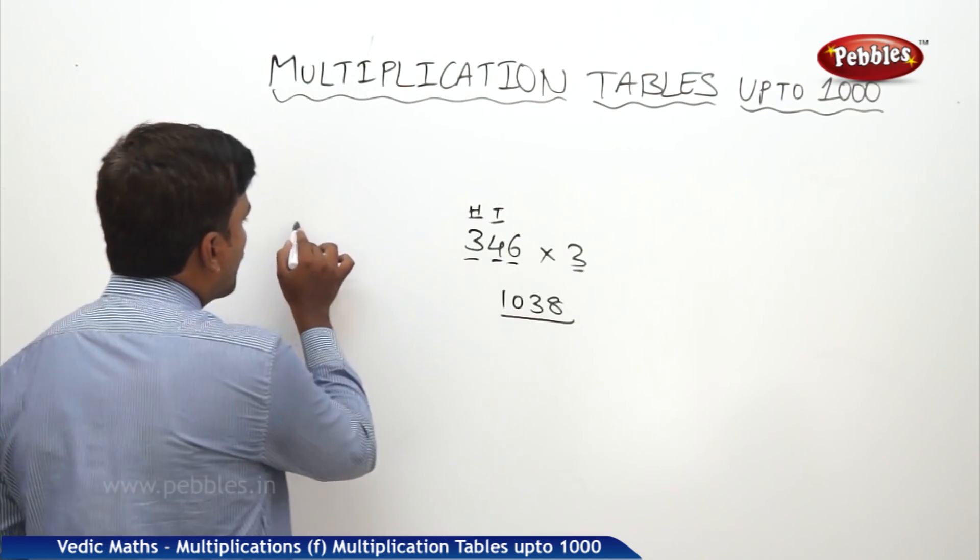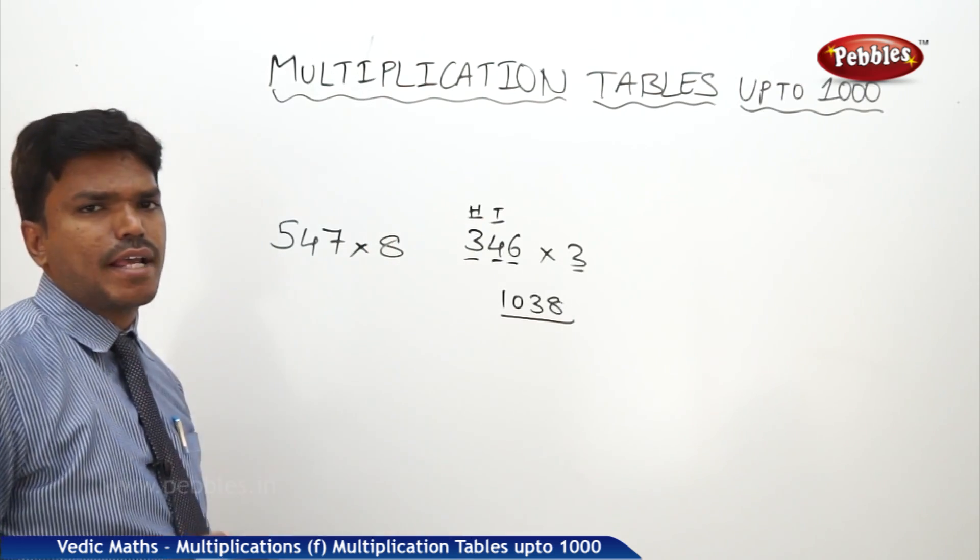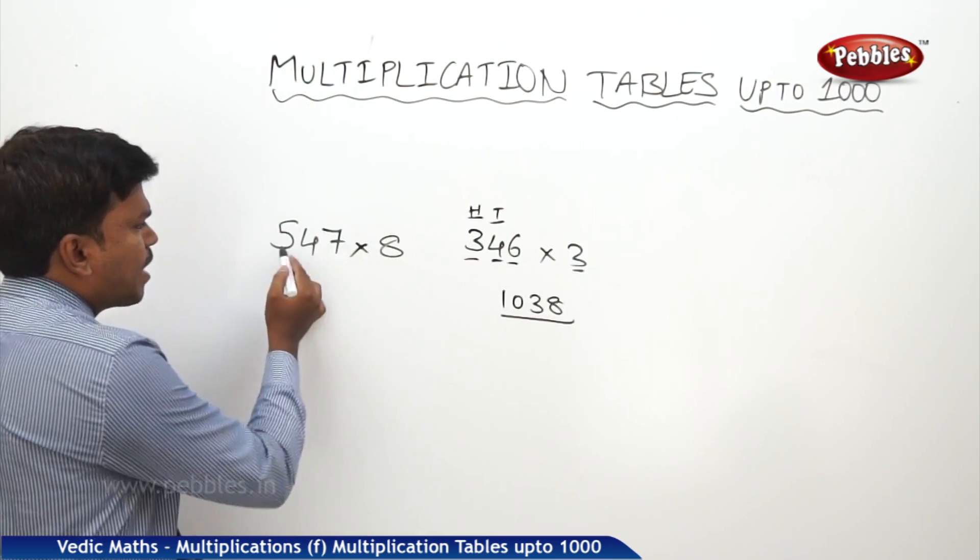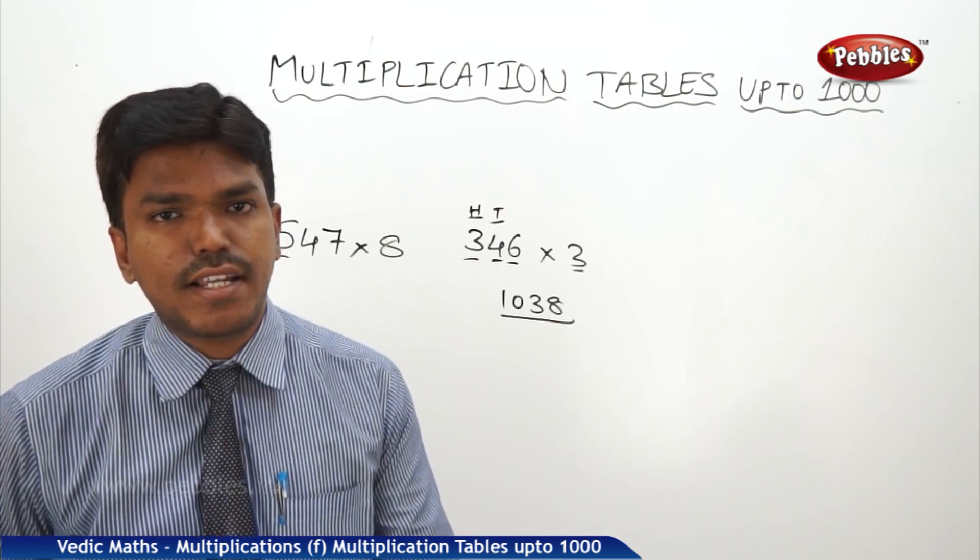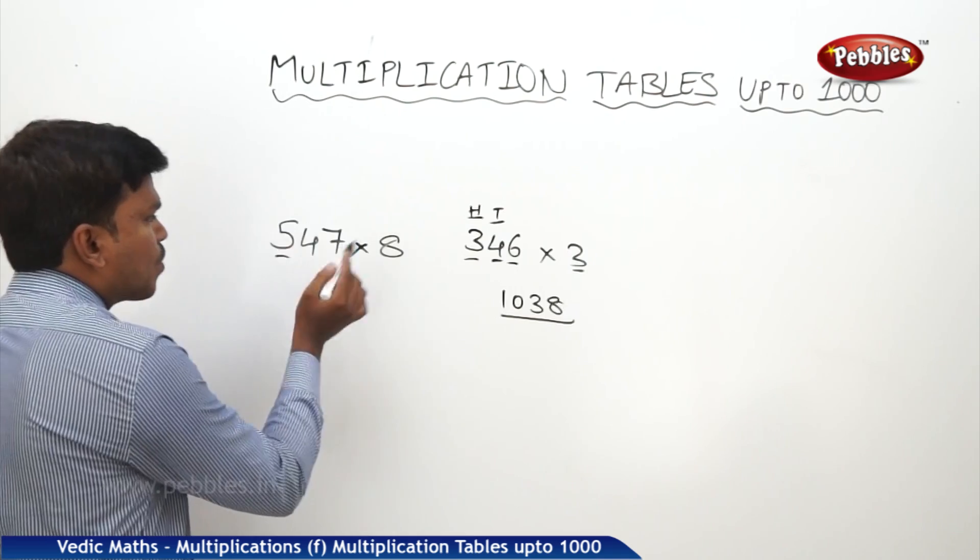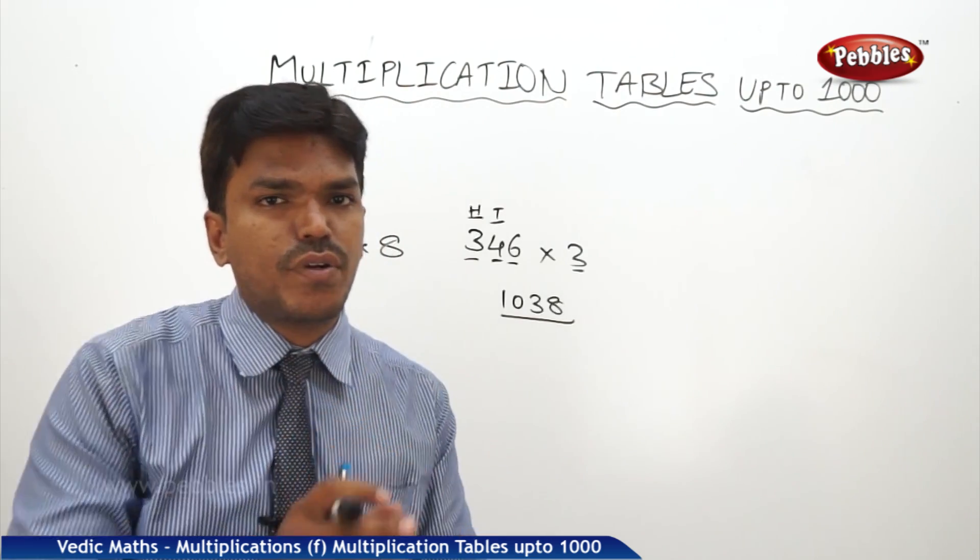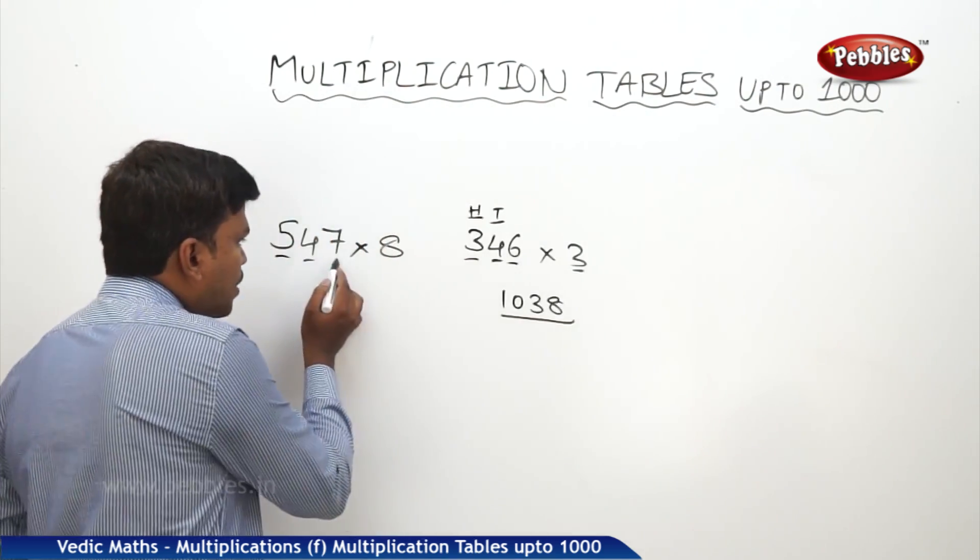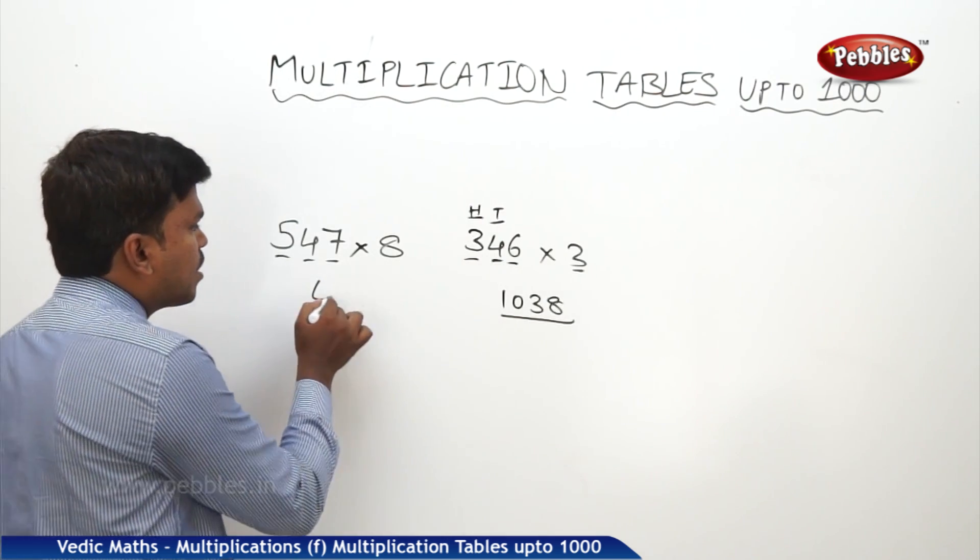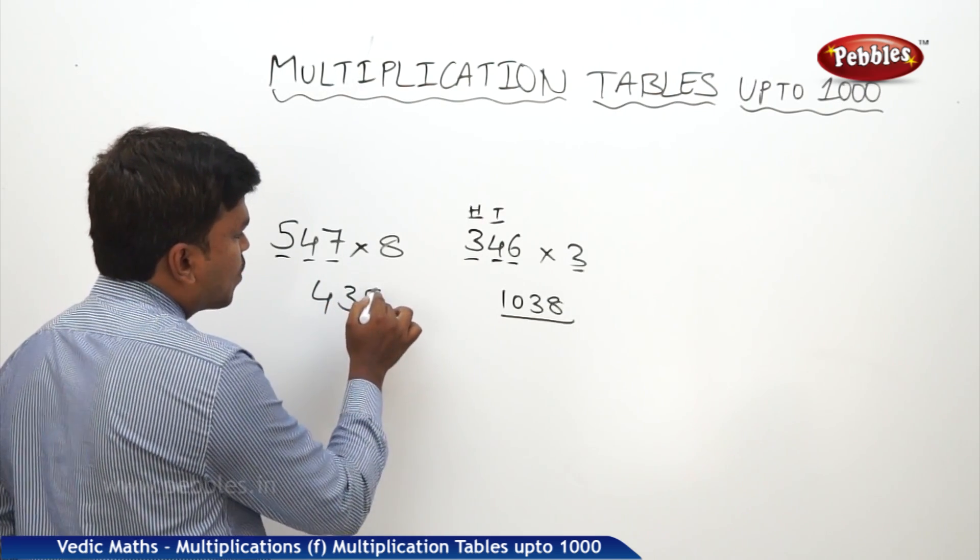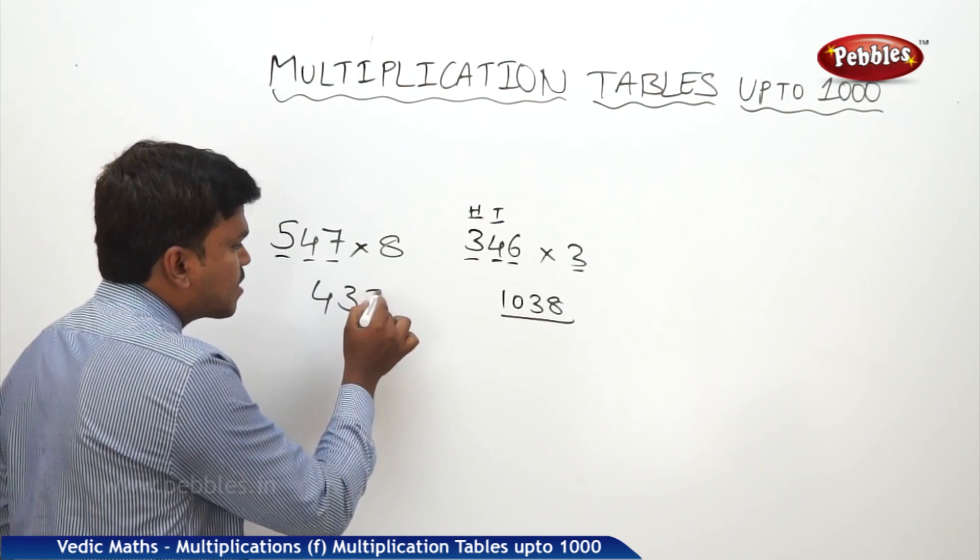One more example. I want to calculate 547 into 8 times in the mind. Now you tell me what is 8 fives? 40, but take it as 40 hundreds, that is 4000. Keep in the mind. Now what is 8 fours? 32, take it as 320. 4000 plus 320. 4000 320 plus 56. 4000 320 plus 56, how much? 4376.